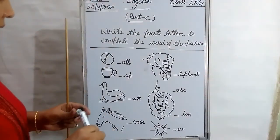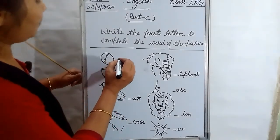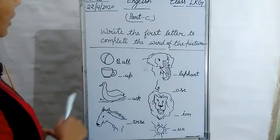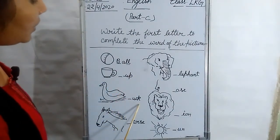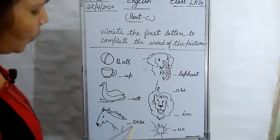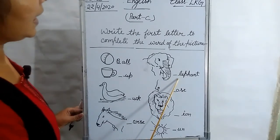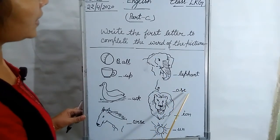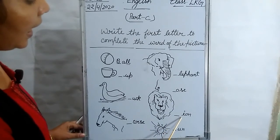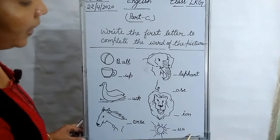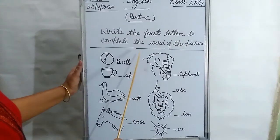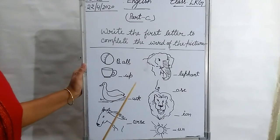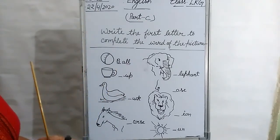First, I will do for you. B — write like this. B-A-L-L, ball. C-U-P, cup. D-U-C-K, duck. H-O-R-S-E, horse. E-L-E-P-H-A-N-T, elephant. N-O-S-E, nose. L-I-O-N, lion. S-U-N, sun. You have to make these pictures in your copy and complete these words. And learn also. This is your homework. Understood, students?